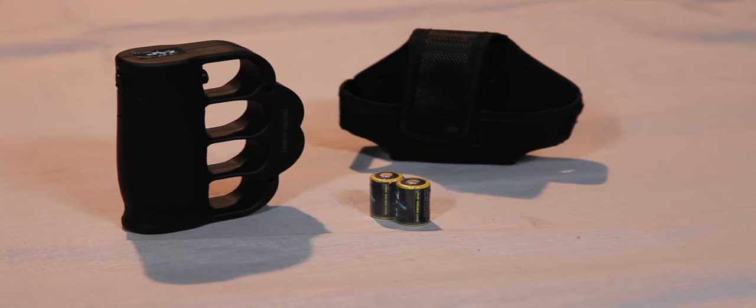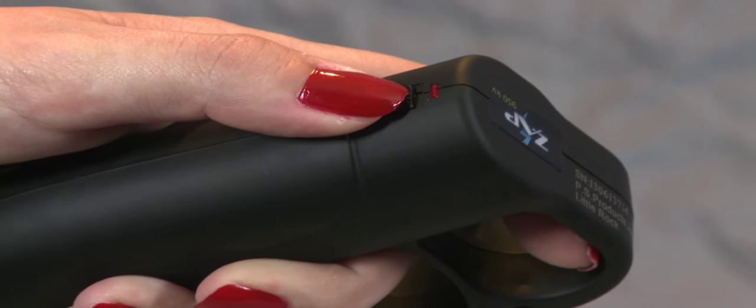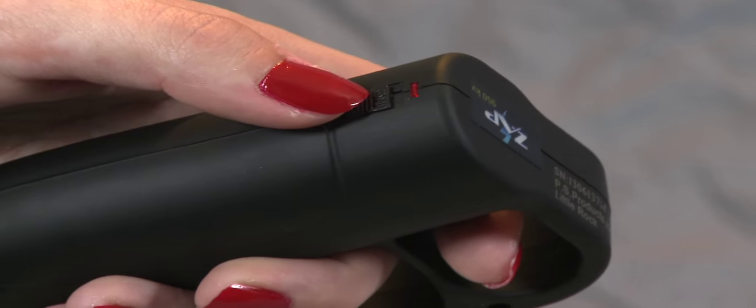Also included is a convenient nylon carrying case with a belt clip. To install your batteries, turn the on-off switch located on the handle to the off position.